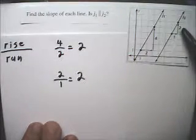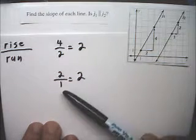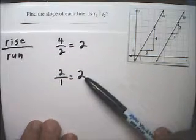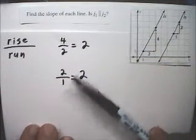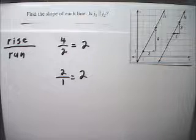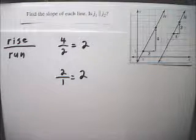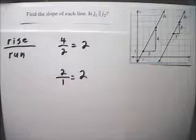Here the rise is 2 and the run is 1, so the slope is also 2. And because the slopes are equal, the lines are parallel.